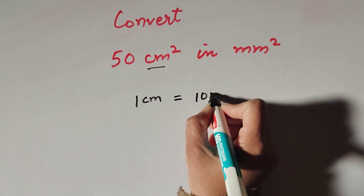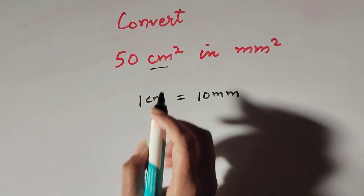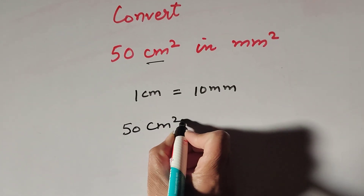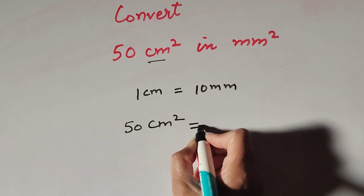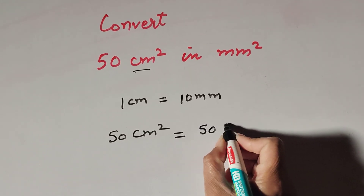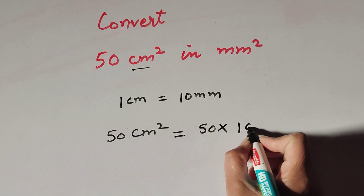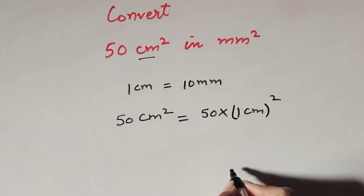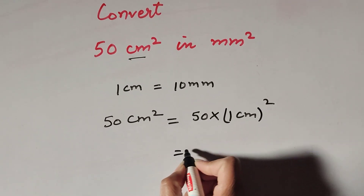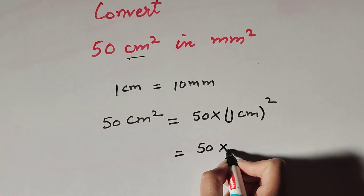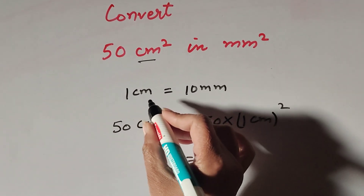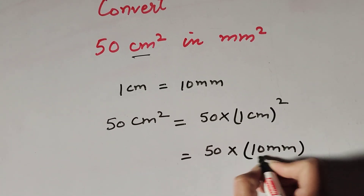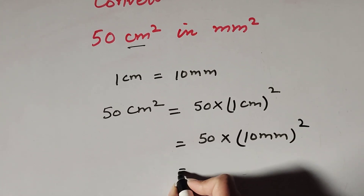Given is 50 centimeter square, which we write as 50 multiplied by (1 centimeter) whole square. Since 1 centimeter equals 10 millimeter, this becomes 50 multiplied by (10 millimeter) whole square.